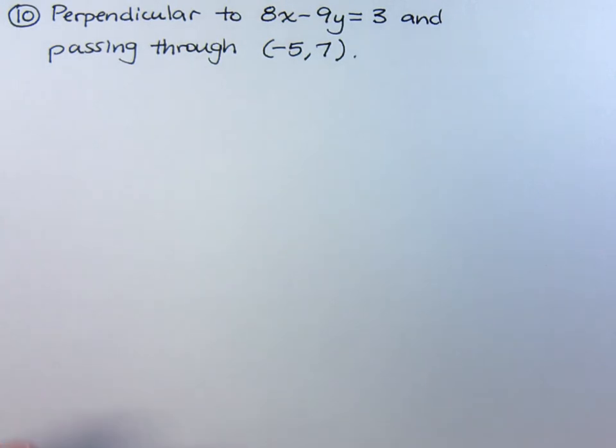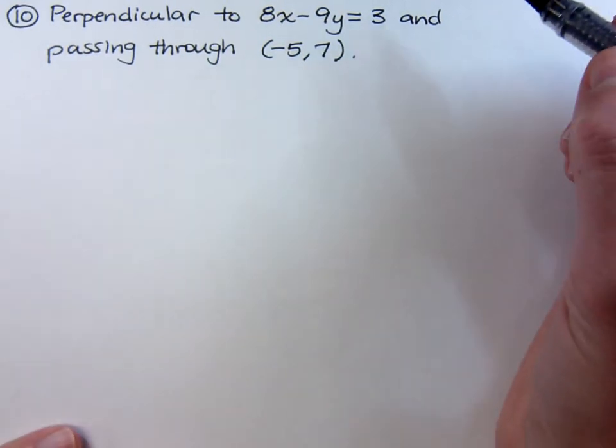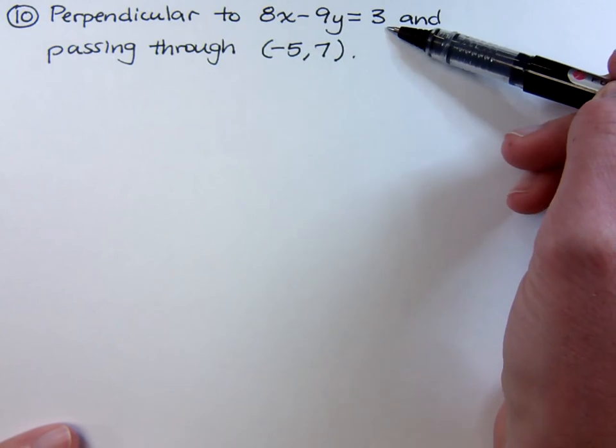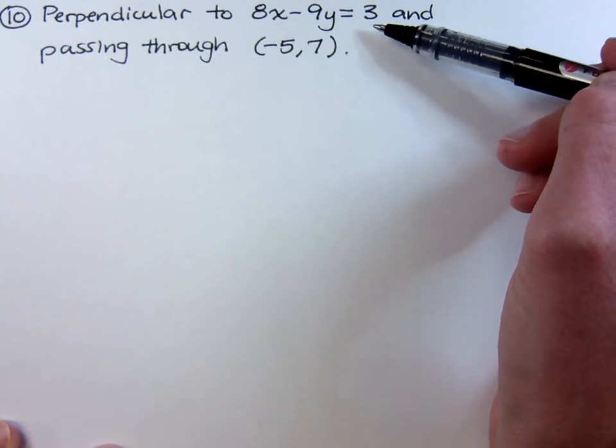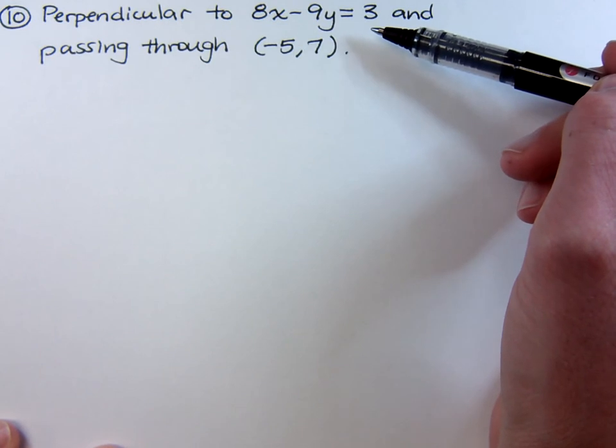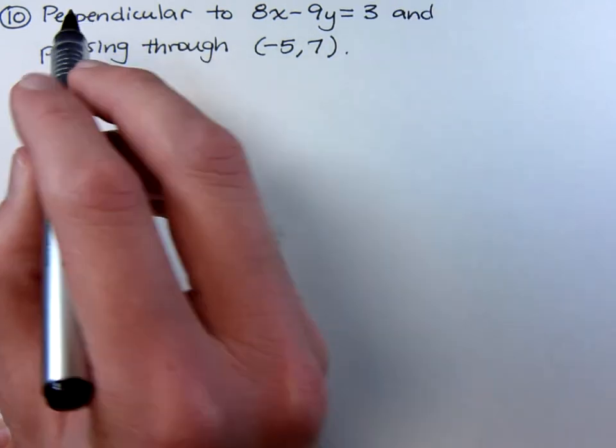All right, let's do another example where we need to write an equation of a line, and we're already given one line that's in standard form. Now, this one can be kind of tricky. We just have to know a couple of tricks and understand what it means to be perpendicular.